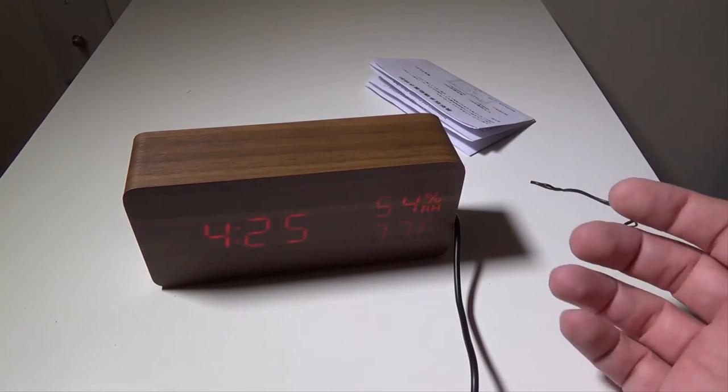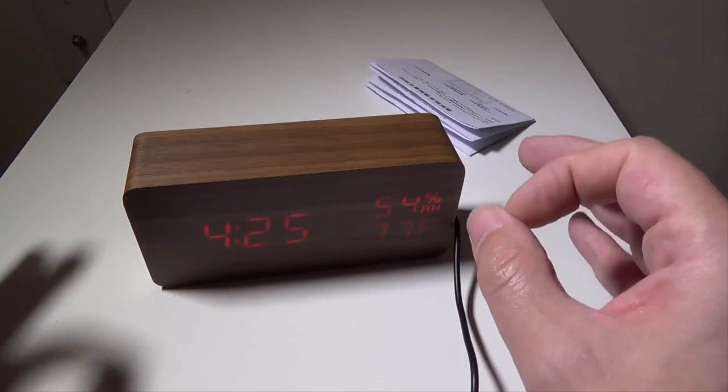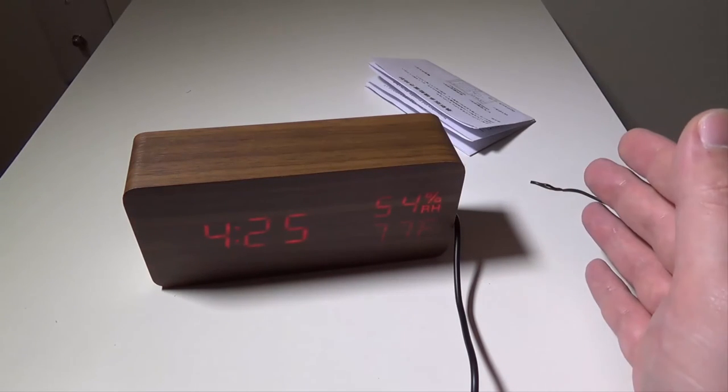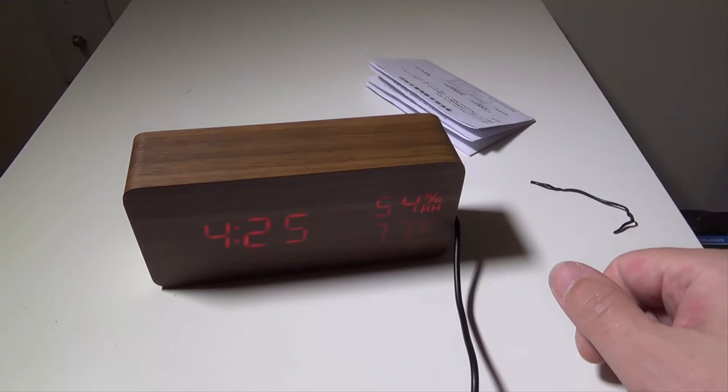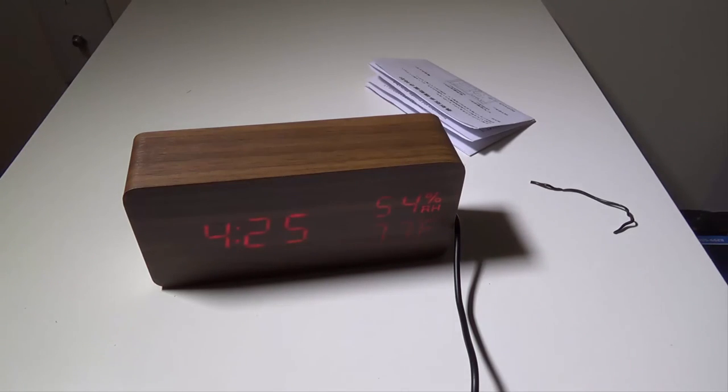This was Luke from Galaxy Tech Review, and this was the KUWU digital alarm clock with humidity and temperature function. Again, you can check it out on Amazon. If you have any questions or comments, please leave them in the comment section below and I'll get back to you as soon as possible. Remember to like and subscribe, and I'll check you guys out on the next video.